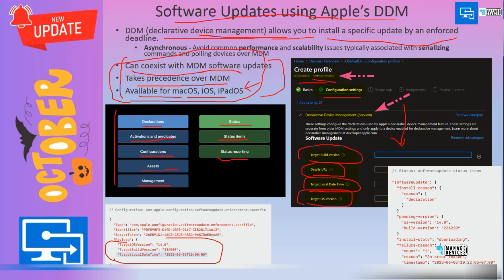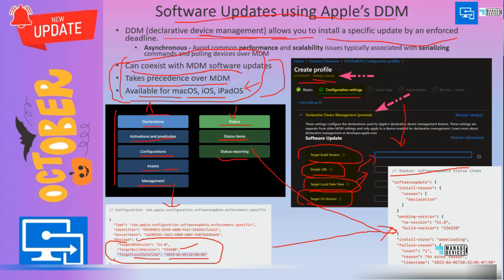If you are confused about what to enter for the target build version of Apple devices, here is an example. The target version is 14.0 and the build version is 23.5.0.0, along with the target local date and time — that is the information you need to fill in this policy in Intune. Looking at the status portion, this is the declaration part, and the status part shows that the policy is coming via declaration.